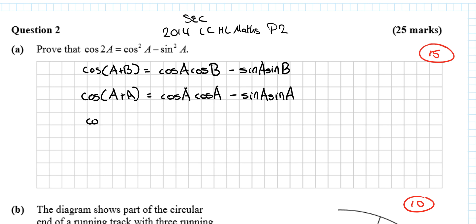Cos A by cos A is cos squared A. A plus A is 2A. Cos squared A minus sin squared A. And that's the proof done for 15 marks in all of a minute and 30 seconds, 15 marks. Absolutely beautiful question to begin with.